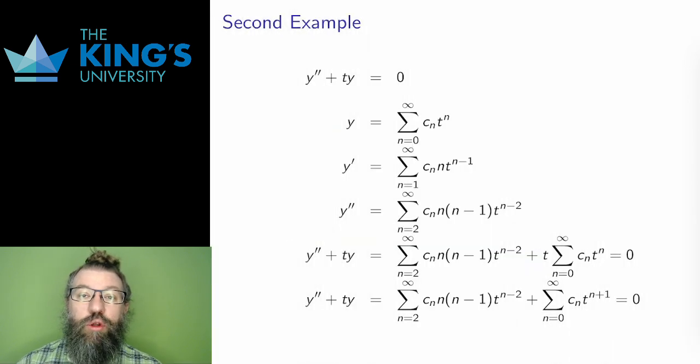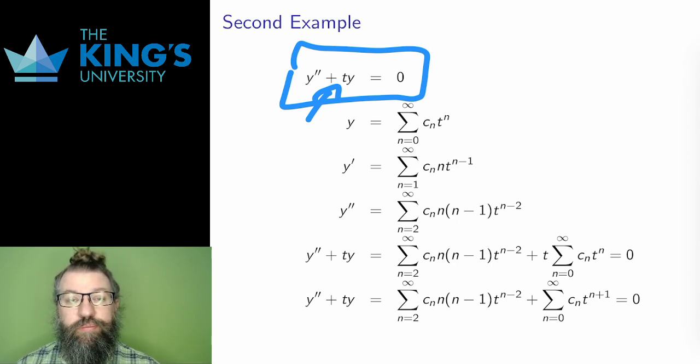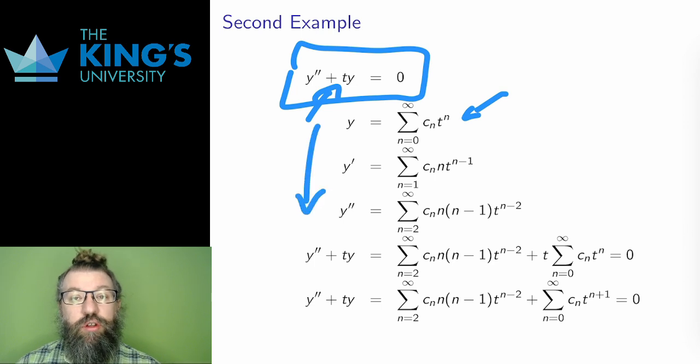For a second example, I'll only make a small change. Changing Q to T instead of just constant 1. In terms of harmonic motion, this is saying that the stiffness of the spring is linearly increasing over time. The coefficients are analytic everywhere, so I can choose any center point. I'll choose 0. Here is the generic series and its derivatives. I'll put those into the differential equation.